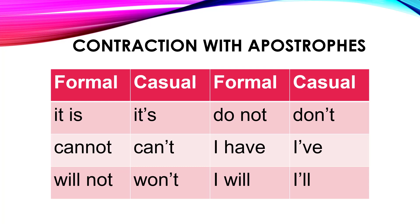Cannot becomes can't — notice where the apostrophe goes: N apostrophe T. That pattern shows up a lot; notice it shows up in won't and in don't, the contractions of will not and do not. Then we've got the special cases: I've for I have, and I'll for I will. The only thing I can recommend is that you pretty much memorize the hundred or so contraction words and go with it.